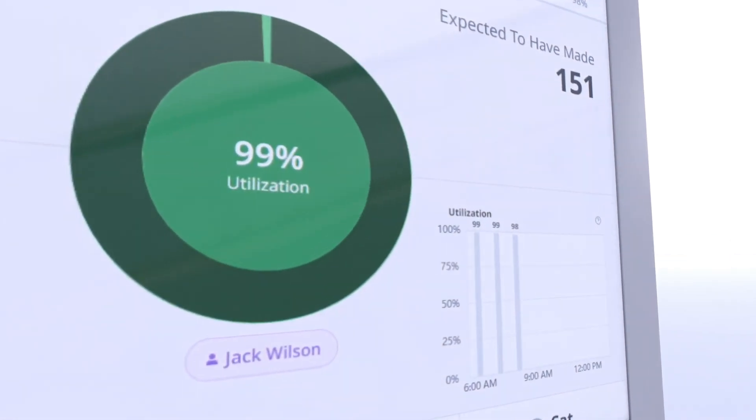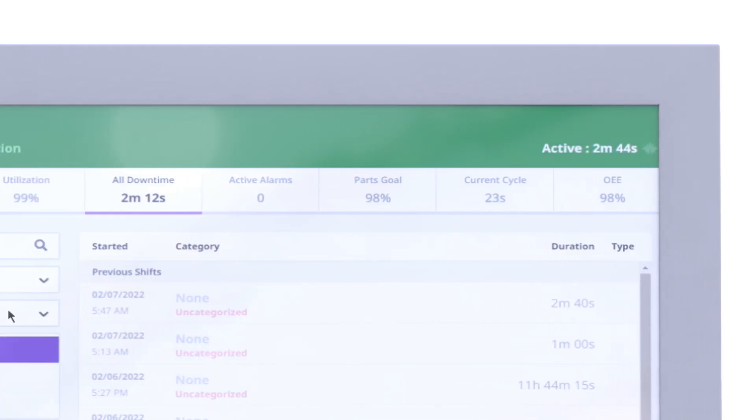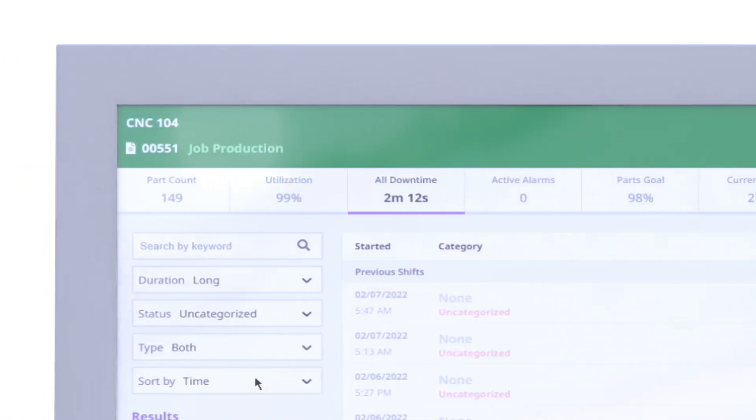So manufacturers can optimize workflows, detect hidden patterns, and eliminate bottlenecks before they even occur.